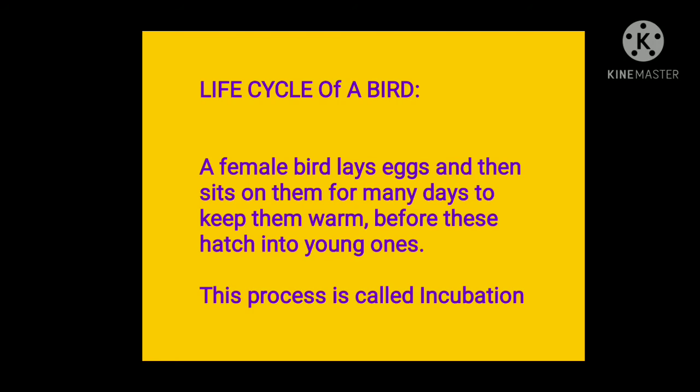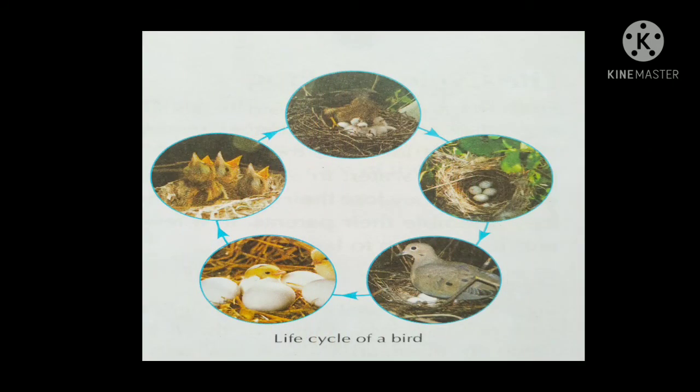Life cycle of a bird: A female bird lays eggs and then sits on them for many days to keep them warm before they hatch into young ones. This process is called incubation. This is a diagram of the life cycle of a bird. The mother bird lays eggs and sits on them to give warmth. Due to this warmth, the eggs incubate, and finally after a few weeks, they hatch and baby birds come out.